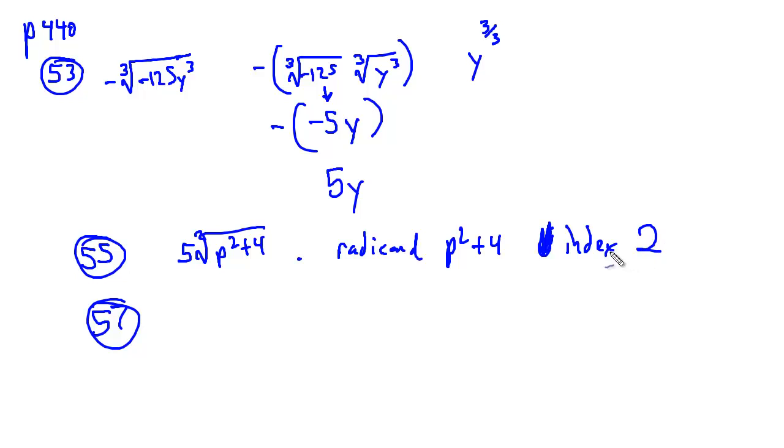So the radicand is going to be p squared plus 4, and the index in this case is 2, because this is a square root. Now if we really wanted to go with degree, it would be one half because the square root of anything is the same as the half power. So degree and index are not exactly the same things as you can see.